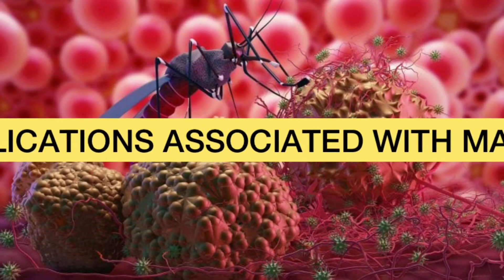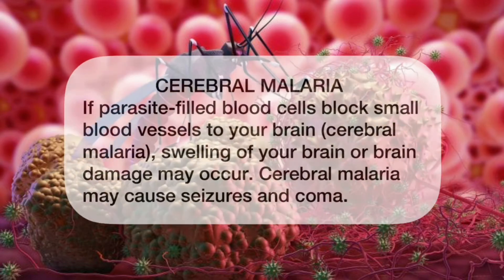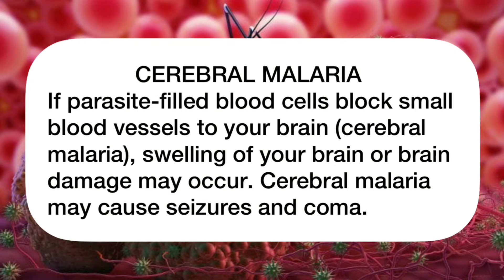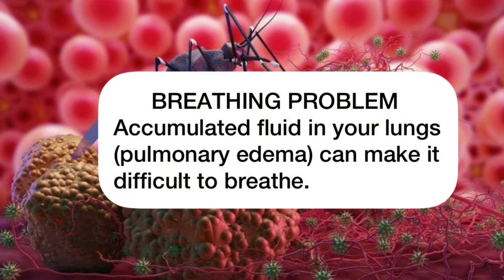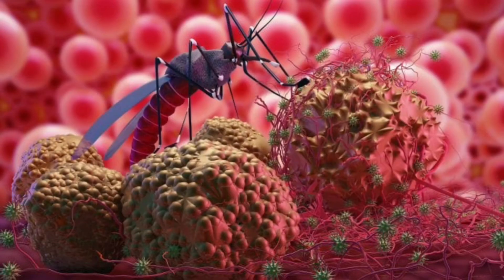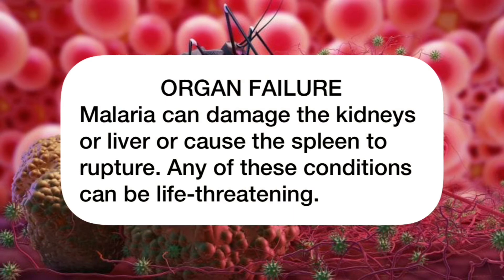Complications associated with malaria: Firstly, we take a look at cerebral malaria. If parasite-filled blood cells block small blood vessels to your brain, swelling of your brain or brain damage may occur. Cerebral malaria may cause seizures and coma. Regarding breathing problems, accumulated fluid in your lungs can make it difficult to breathe. There can also be organ failure — malaria can damage the kidneys or liver, or can cause the spleen to rupture. Any of these conditions can be life-threatening.